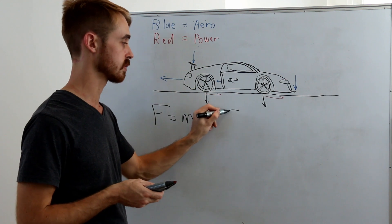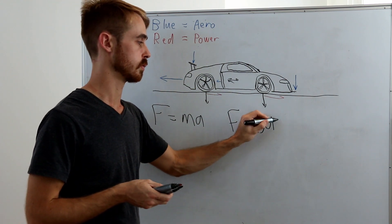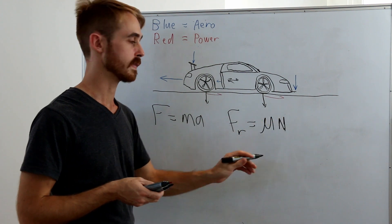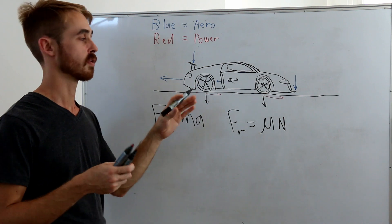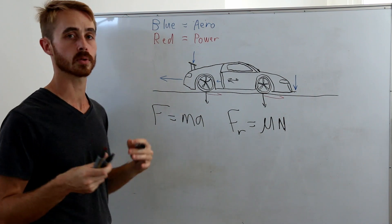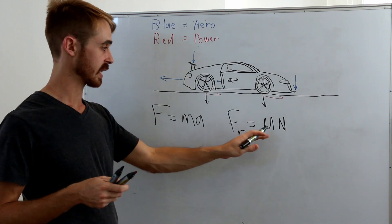Then our grip of the tires, which is Fr = μN. This is the amount of tractive force we have available at the tires before they start to spin. At low speeds we're going to assume that our car has enough power to spin the tires, so we'll be at this limit.